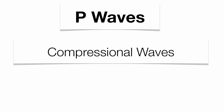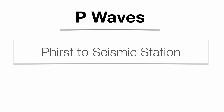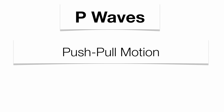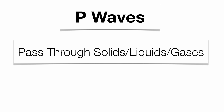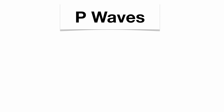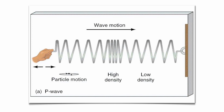You need to know your characteristics of P waves. They are called compressional waves, also known as primary waves. They're first to arrive at a seismic station, and they are faster than an S wave. They travel in a push-pull motion, and they can pass through solids, liquids, and gases. They're fast, like a Porsche. Notice that all your characteristics start with the letter P. There's your P wave — it travels like a slinky, and you see the compression as it travels from the person's hand to the wall.